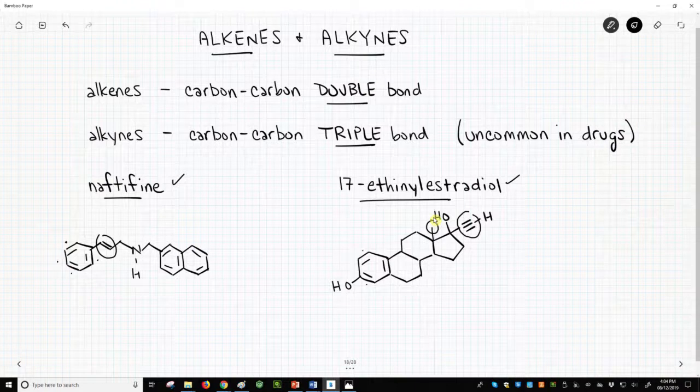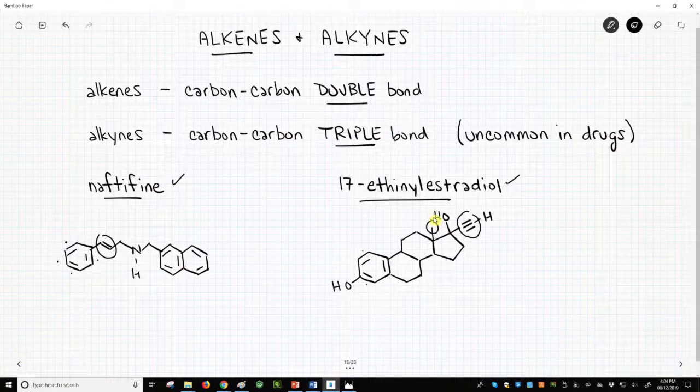Alkenes, carbon-carbon double bonds, are an extremely common functional group in drug-like molecules. Alkynes, carbon-carbon triple bonds, are much less common.